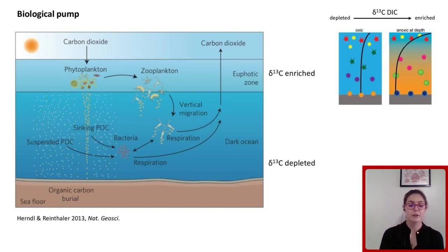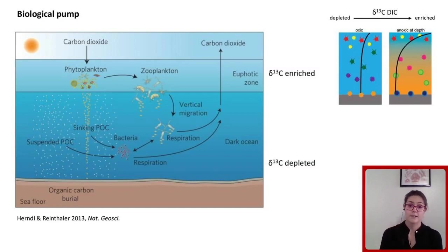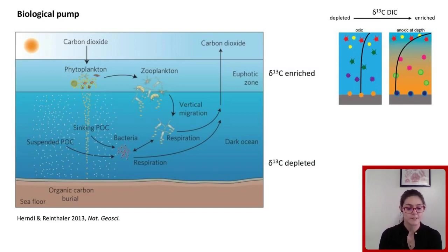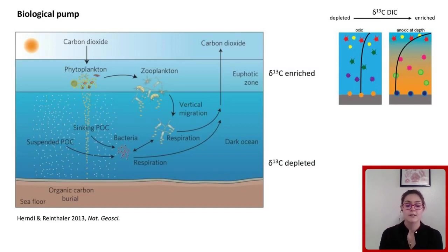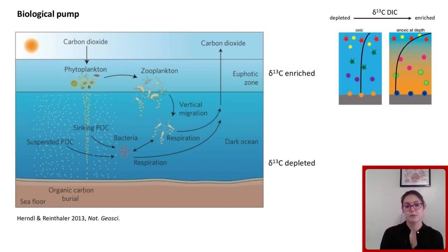We would expect heavier carbon isotope values at the surface due to export of light carbon via photosynthesis. If there is a lack of circulation or a lot of production, heavy carbon would accumulate at the top. In contrast, in a well-mixed ocean there would be a smaller gradient. We can try to assess this for pre-Cambrian ecosystems by measuring carbon isotopes on single fossils to see if they take up carbon from a particular part of the water column.